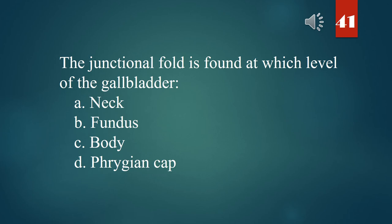The junctional fold is found at which level of the gallbladder? A. Neck. B. Fundus. C. Body. D. Phrygian cap. The answer is A. Neck.